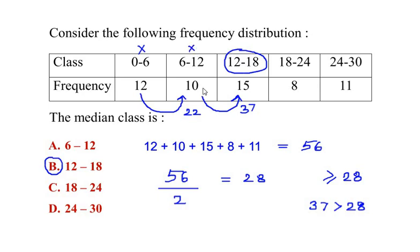So again we added the total 22 which we got with the next class which was 15. So 22 plus 15 gave us 37 which was greater than 28. That is why we are going to consider 12 to 18 as a median class because we have satisfied this condition.